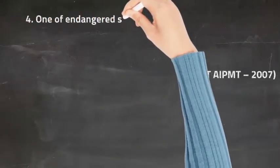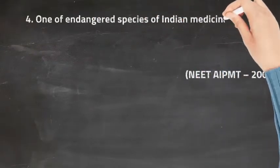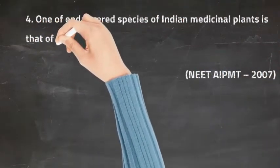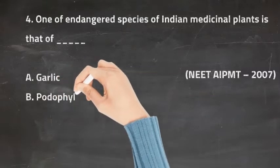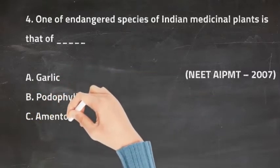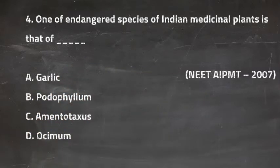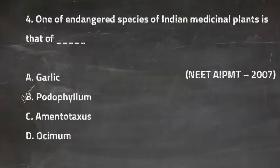Q4: One of the endangered species of Indian medicinal plants is — Option A Garlic, Option B Podophyllum, Option C Amento-Tacus, and Option D Osimum. The right answer is Option B, Podophyllum.